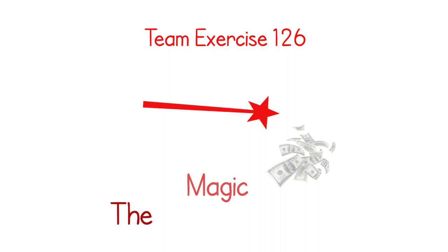Team exercise 126. The magic words. During this exercise you tell the team to sit on one side of the room.